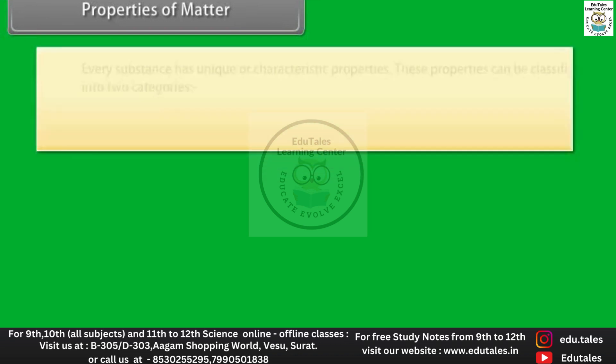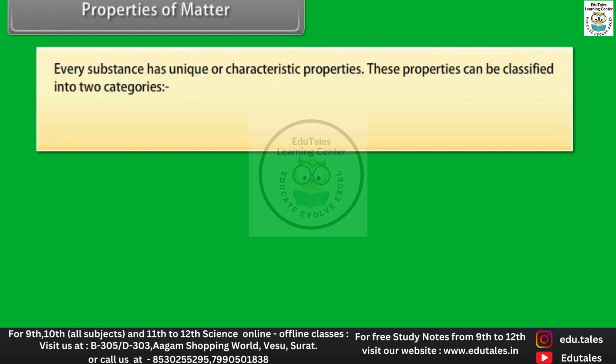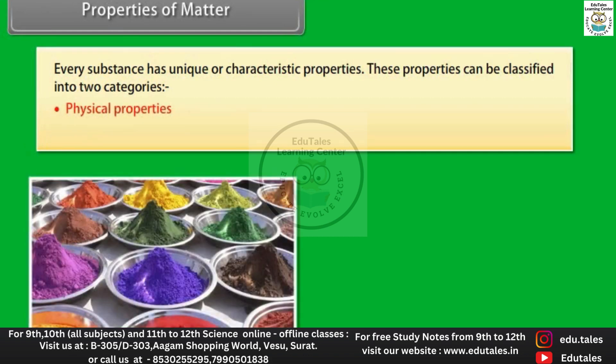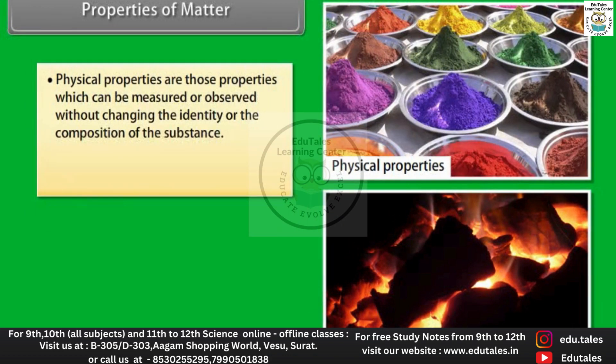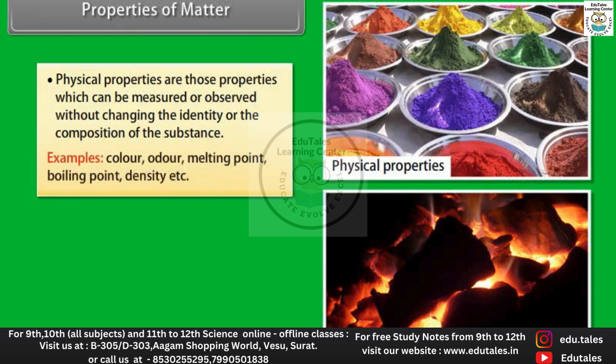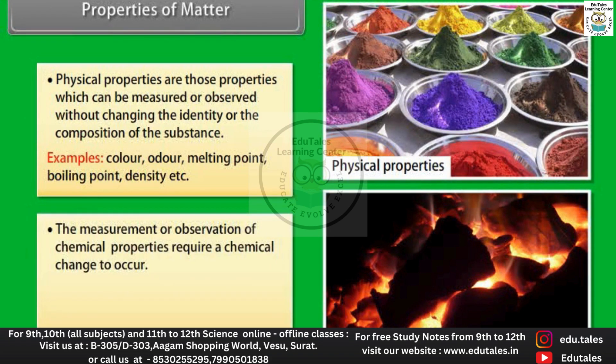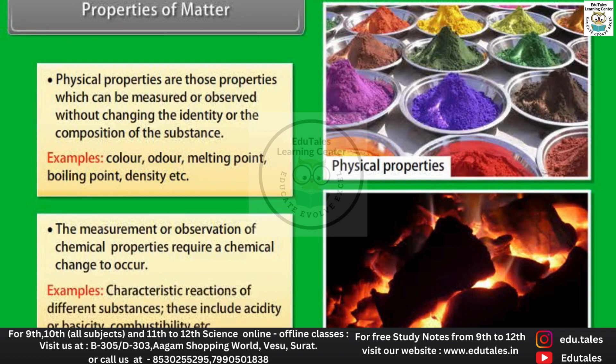Every substance has unique or characteristic properties. These properties can be classified into two categories, physical properties and chemical properties. Physical properties are those properties which can be measured or observed without changing the identity or the composition of the substance. Examples: color, odor, melting point, boiling point, density. The measurement or observation of chemical properties require a chemical change to occur. Examples: characteristic reactions of different substances. These include acidity or basicity, combustibility.